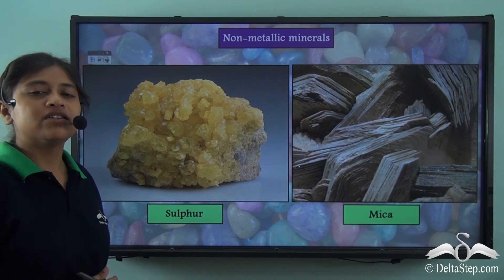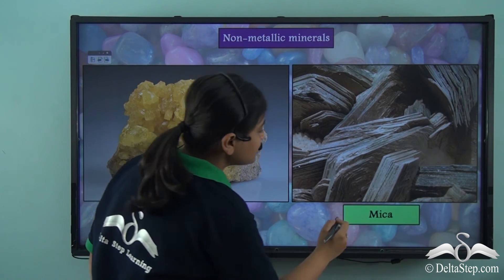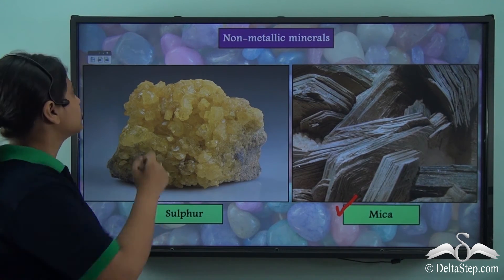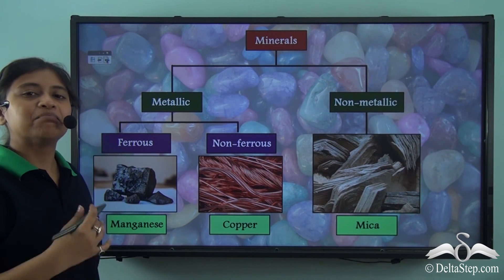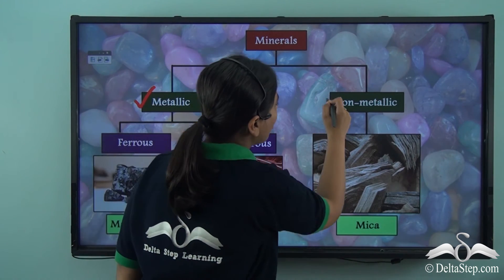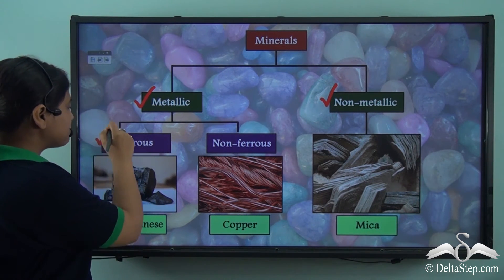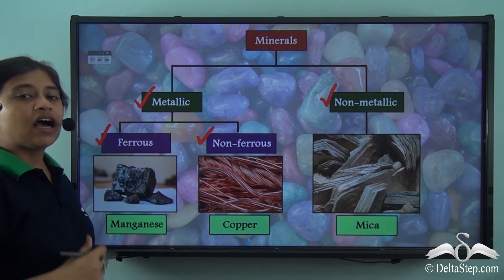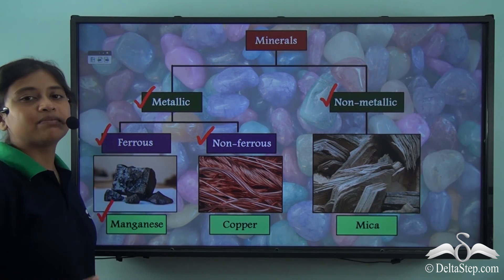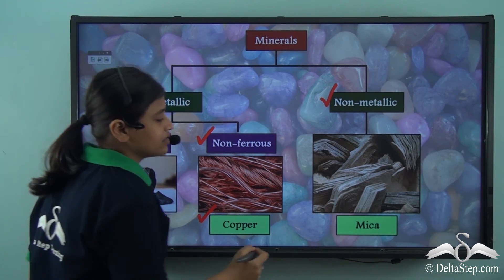Now let us take examples of non-metallic minerals. Some common examples of non-metallic minerals are sulphur and mica. So far we have understood that minerals can be divided under two broad headings — metallic minerals and non-metallic minerals — where metallic minerals can be further subdivided as ferrous and non-ferrous. A common example of non-metallic minerals is mica.